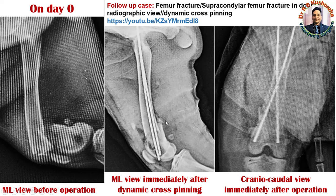This is the mediolateral view of this cross-pinning. In the mediolateral view it is very difficult to say from where the pins cross, but one pin is inserted from the lateral epicondyle and another one is inserted from the medial epicondyle. This is the craniocaudal view of this fractured bone — the craniocaudal view of the supracondylar fracture immediately after repair with cross-pinning.